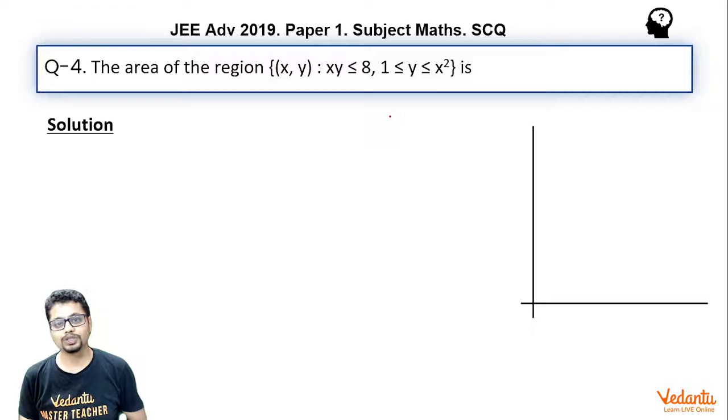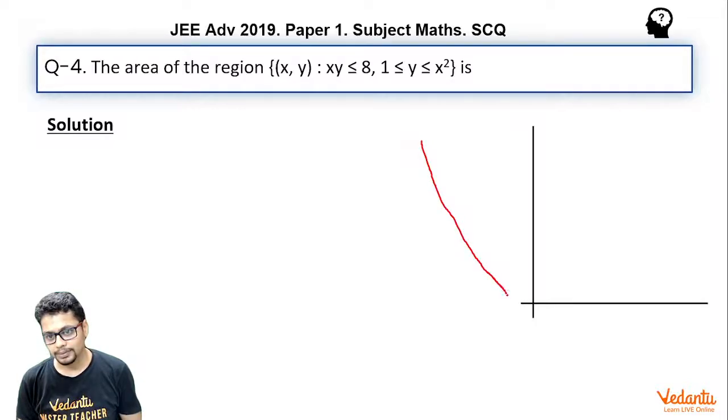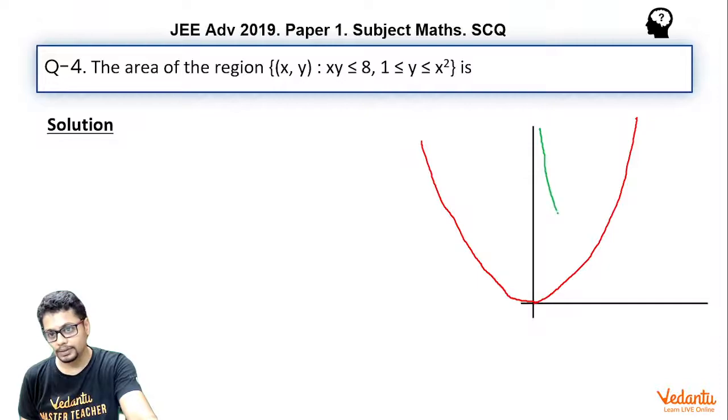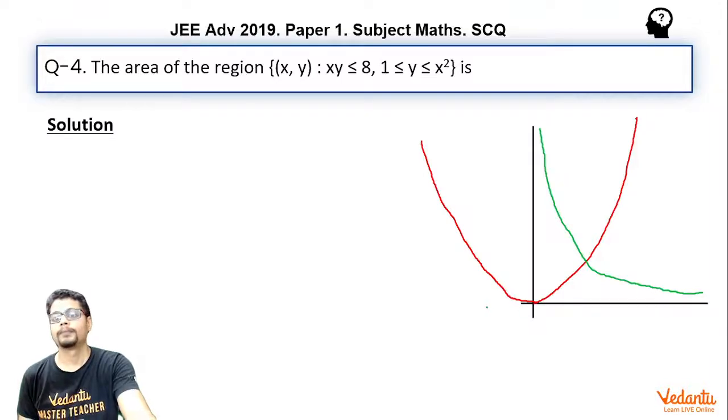So here let's first draw these curves. Whenever there is an inequality, we first draw the curves taking equalities and then we judge the inequality region accordingly. So here first of all, you know y = x². So it will be something like this. Now what about xy = 8? It will be something like this, and there will be one loop in the third quadrant as well.